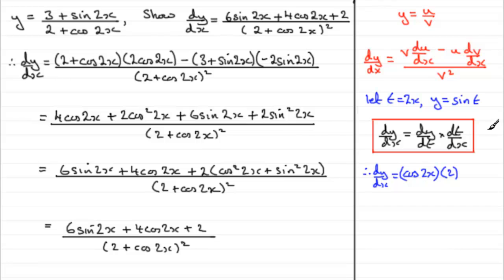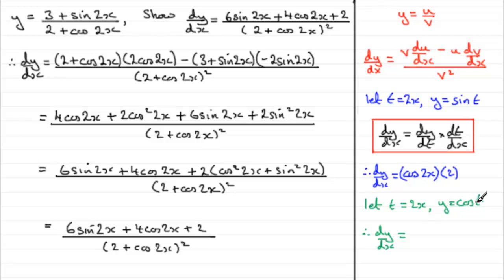Similarly, to differentiate cos 2x, let t equal 2x so y equals cos t. Then dy/dx equals dy/dt times dt/dx. Differentiating cos t gives minus sine t, so we get minus sine(2x), and multiplying by 2 gives minus 2 sine 2x — which is what was used earlier in the solution.